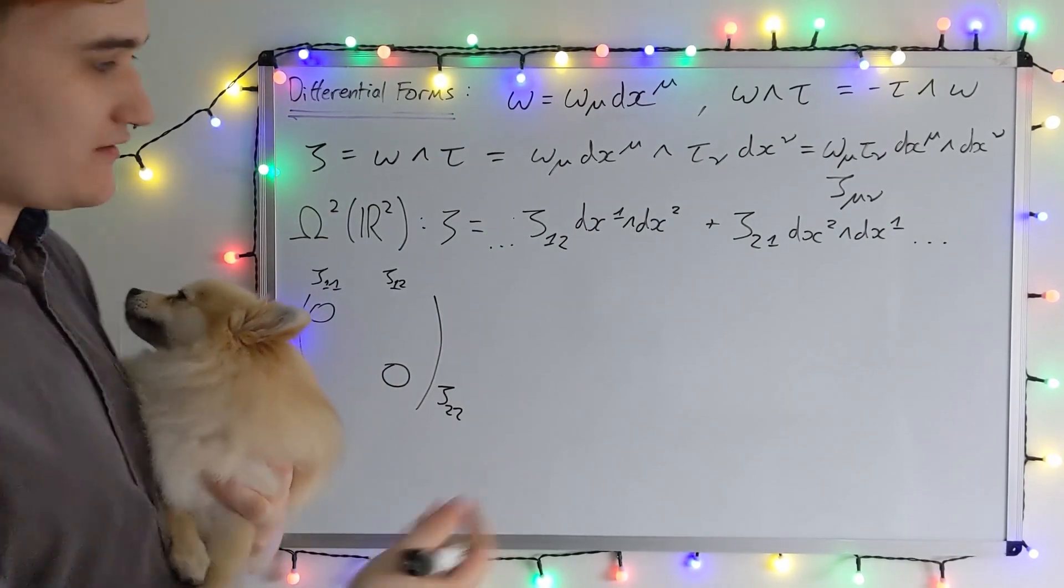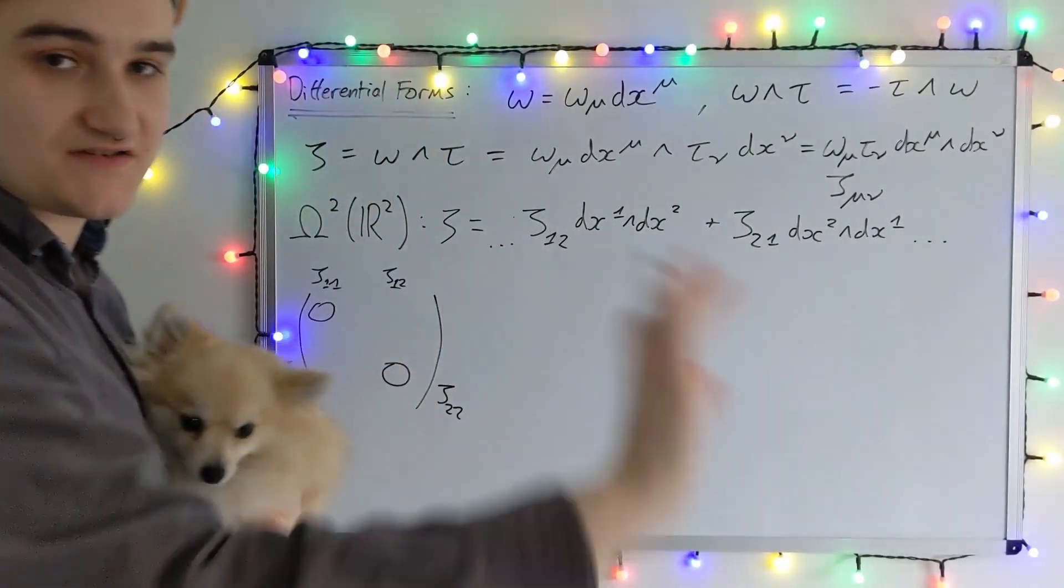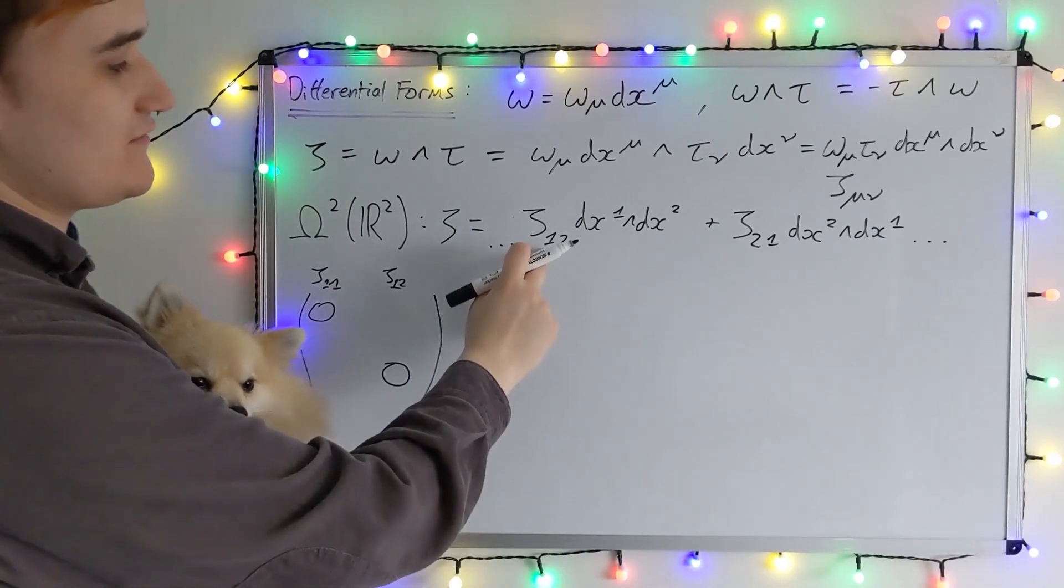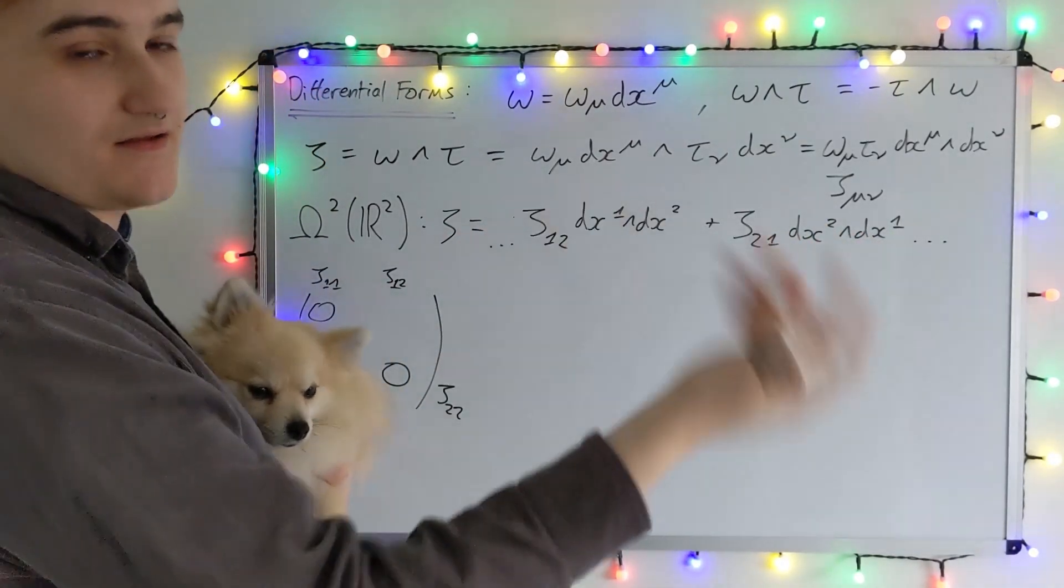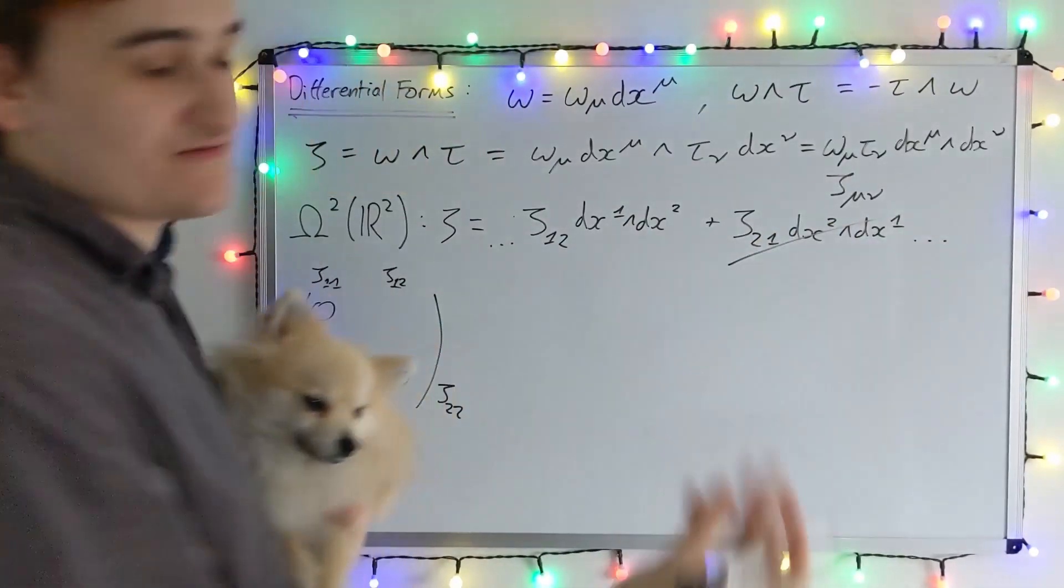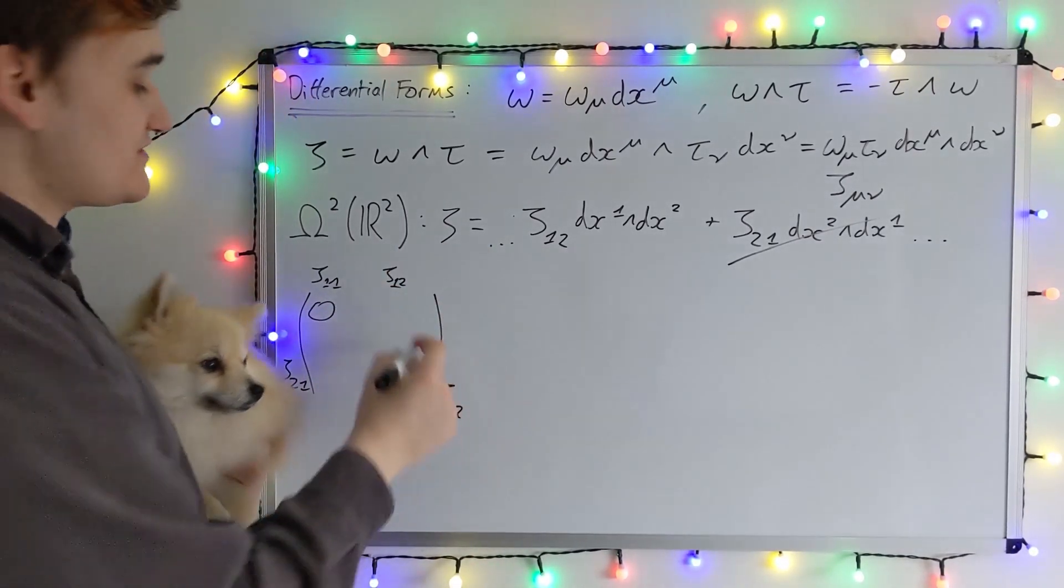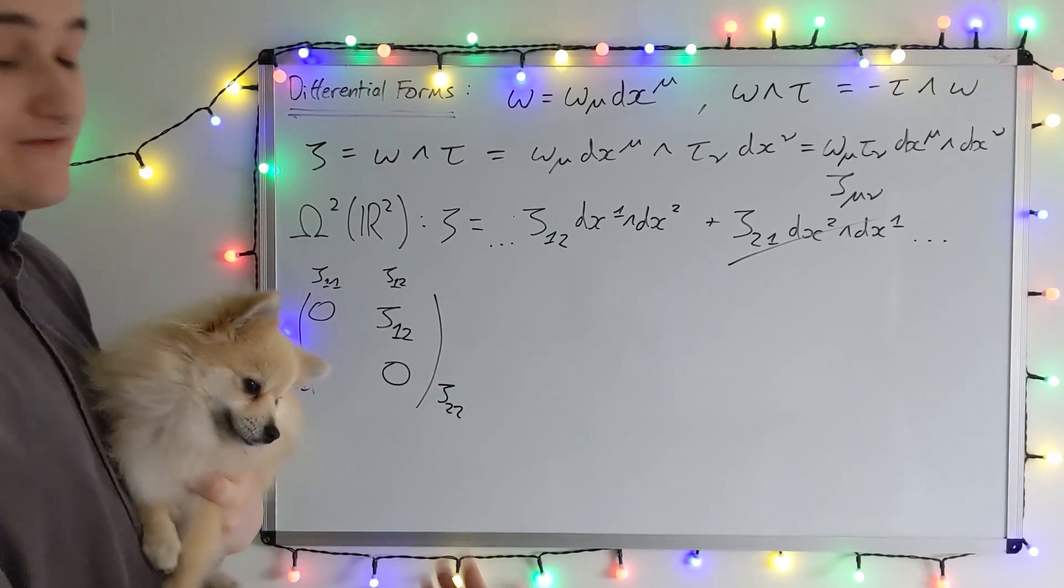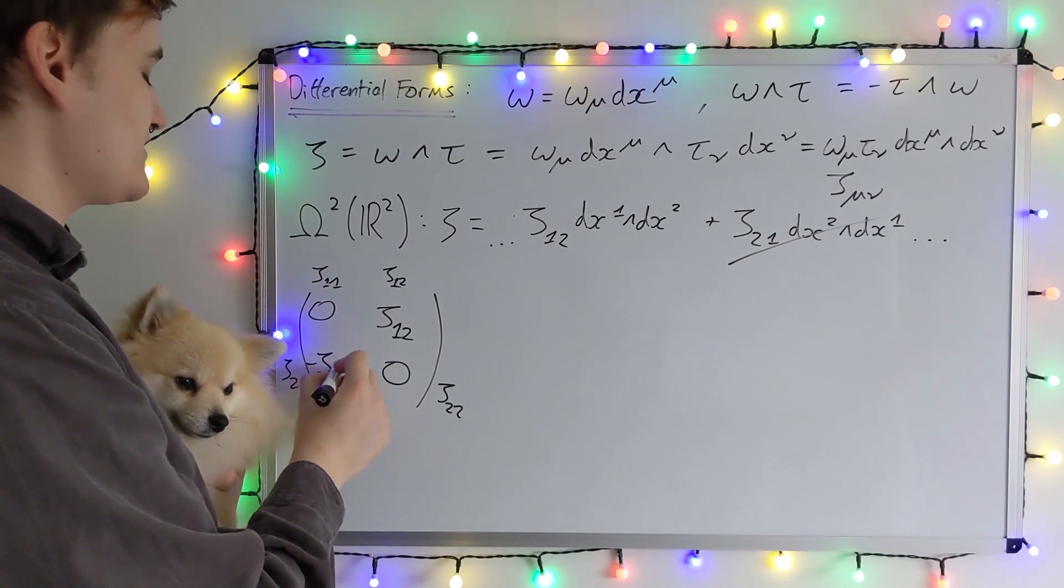So really, the way to state that is that this zeta 2 1 component is just not independent, it's redundant, and it just has to be equal to the negative of this component, since I can just swap the dx's and pick up a minus sign. So this component is redundant, I don't need to bother writing it down, and I just say now that my components are zeta 1 2, and what I previously would have written as zeta 2 1 is just the negative of zeta 1 2.